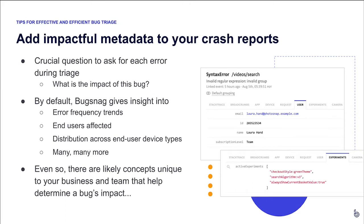For example, in these screenshots here, you can see on the user tab that last data point — subscription level with a value of 'team' — is not something that BugSnag records out of the box. That's something this hypothetical customer has added to their crash reports because the plan or subscription a user is on helps them determine the impact of a given bug. Similarly, in the next image, there's a custom experiments tab that another theoretical customer has added, mapping to an A/B testing style of delivery, including the testing cohorts the affected user was in.